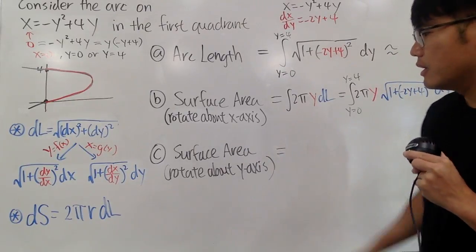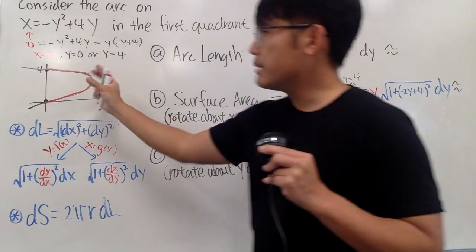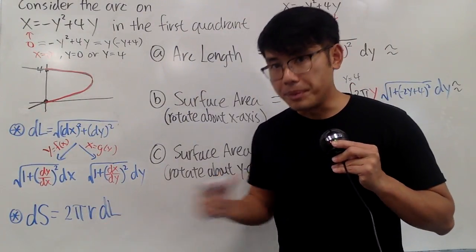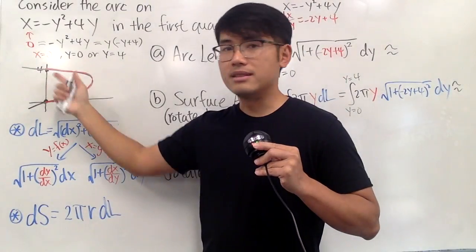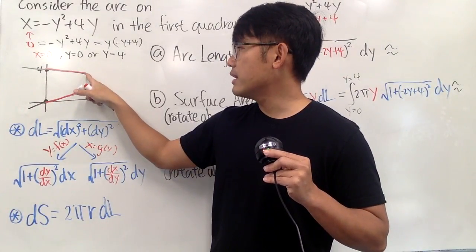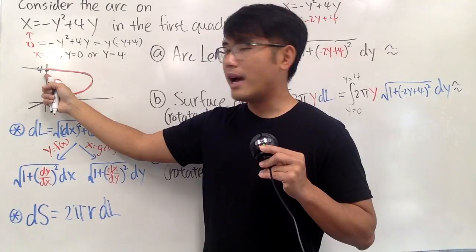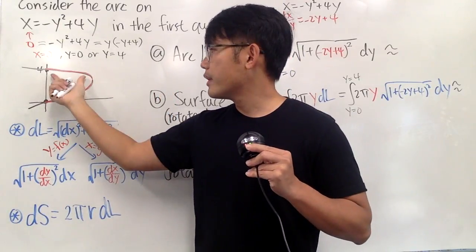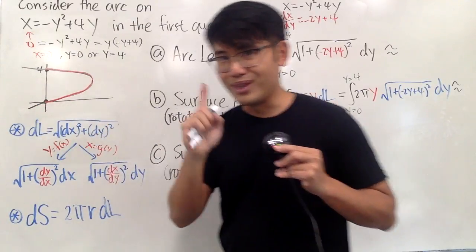Okay, part c. When we take this arc, rotate about the y-axis. So, it goes like this way. In this case, the radius will be the horizontal distance. Just put like a point right here if you would like. Go from the y-axis to here. This is the horizontal distance. That's the x value. And when you rotate, that will be the radius.